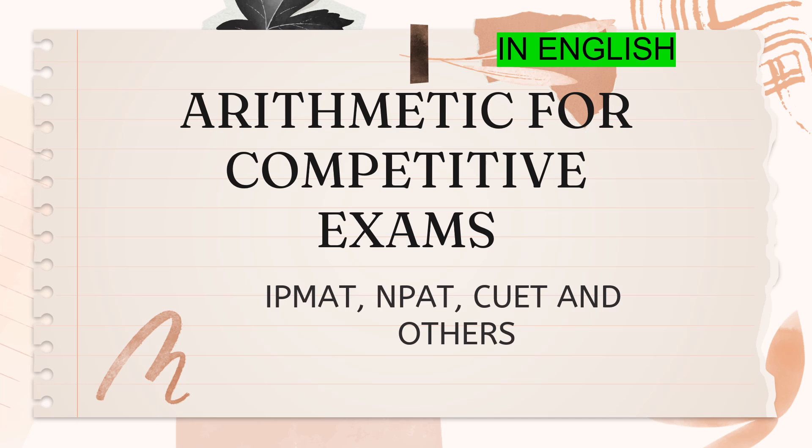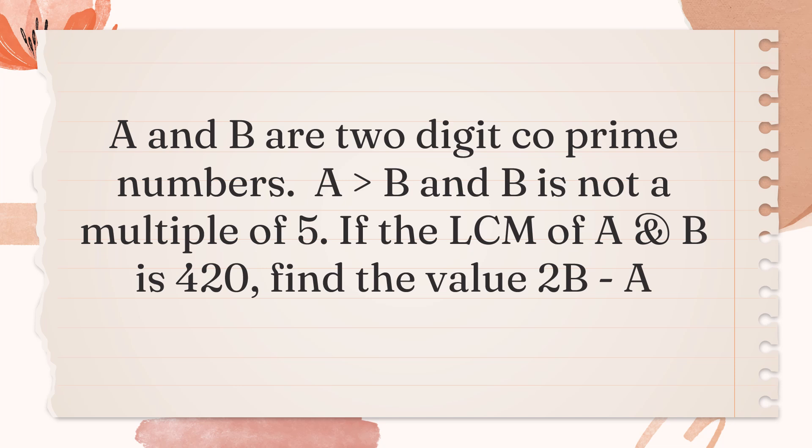Competitive exams arithmetic series. We have one more question to solve today. A and B are two-digit co-prime numbers. A is greater than B and B is not a multiple of 5. If the LCM of A and B is 420, find the value of 2B minus A.